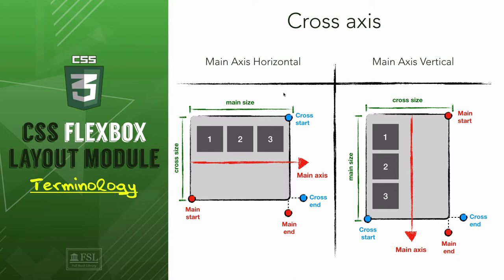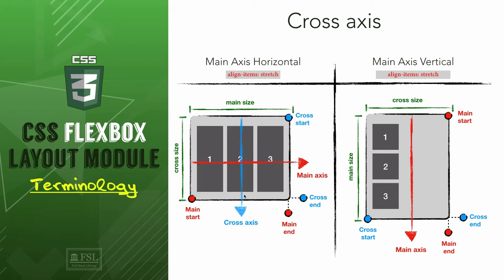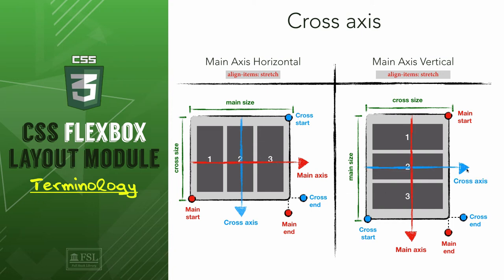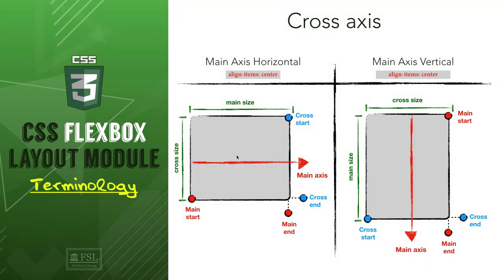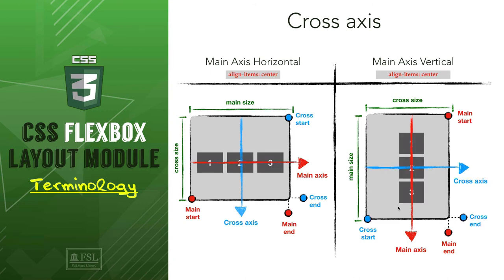The property responsible for how elements are managed on the cross axis is align-items. For example, to stretch flex items to take the entire height of the flex container, we use the value stretch — but the cross axis should be vertical, with cross start at the top and cross end at the bottom. We also have examples of centering elements on the cross axis, both vertically and horizontally.